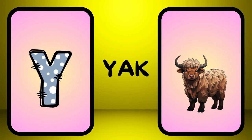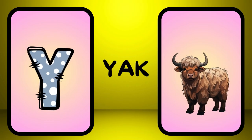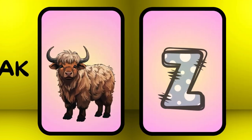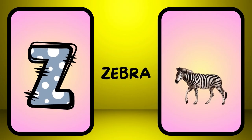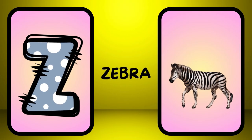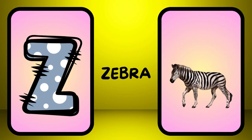Y is for yak, y-y-yak. Z is for zebra, z-z-zebra.